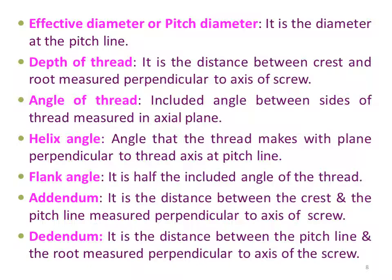Depth of thread — it is the distance between the crest and the root measured perpendicular to the axis of the screw thread. Angle of thread — the angle included between the sides of the thread measured in the axial plane is called the angle of thread. Helix angle — the angle that the thread makes with the plane perpendicular to the thread axis at the pitch line is called the helix angle of the screw thread.